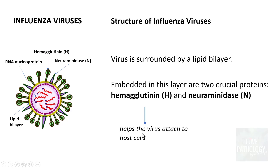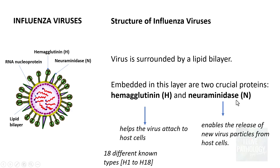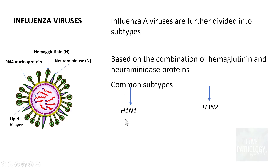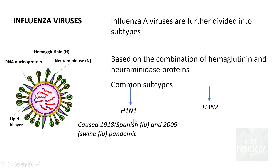Hemagglutinin helps the virus attach to the host cell; there are 18 known types — H1 through H18. Neuraminidase enables the release of new virus particles from the host cell after infection; it has 11 types — N1 through N11. Type A viruses are further divided into subtypes based on hemagglutinin and neuraminidase combinations. The common subtypes are H1N1, which caused the 1918 pandemic and the 2009 swine flu pandemic, and H3N2, which causes significant seasonal flu outbreaks.